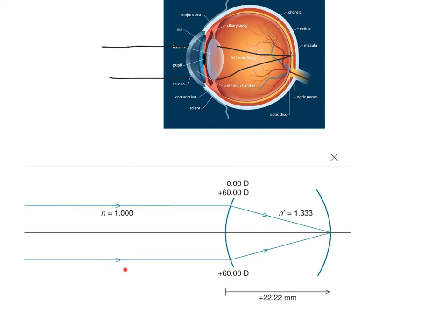So this is called the reduced eye. The reduced eye is about 22 millimeters long. To recap: we have a refracting surface of 60 diopters, the index of refraction inside the eye is 1.333, and the length of the eye is about 22 millimeters.